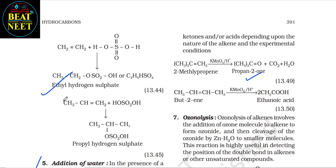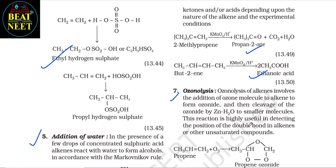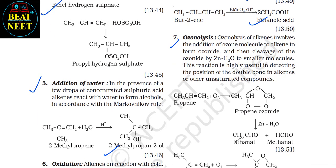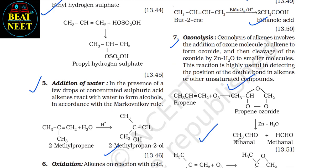Seventh — ozonolysis: ozonolysis of alkenes involves the addition of an ozone molecule to the alkene to form an ozonide, and then cleavage of the ozonide by Zn/H₂O to form smaller molecules. This reaction is highly useful in detecting the position of the double bond in alkenes or other unsaturated compounds. Here you can see this reaction.